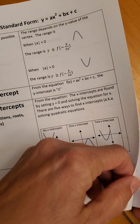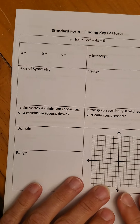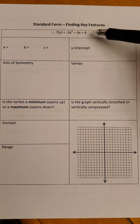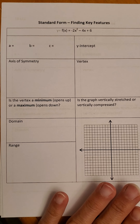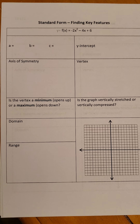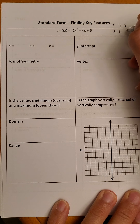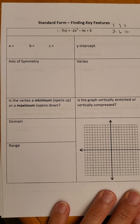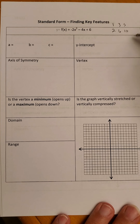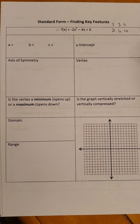So hopefully that reference sheet is next to you, because we are going to graph some parabolas. Looking at this first equation in standard form, I can already see it's upside down — it opens down because of that negative 2 in front. It's also vertically stretched, so my pattern isn't going to be 1, 3, 5 — it's going to be 2, 6, 10. And I know that my Y-intercept is 6.